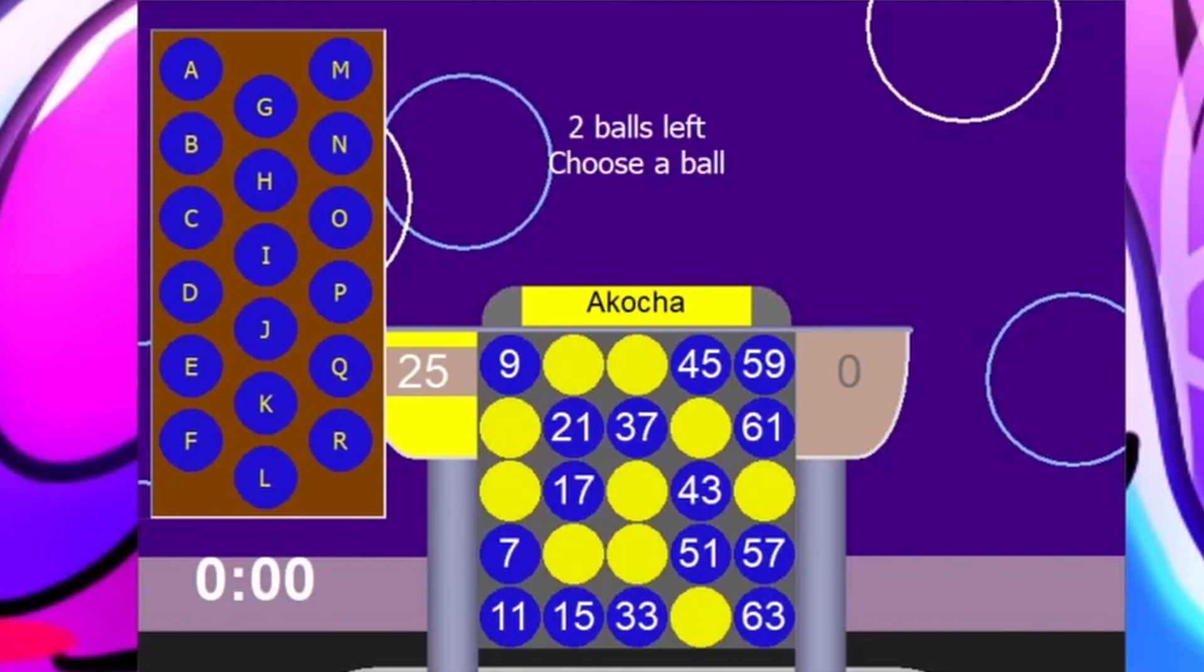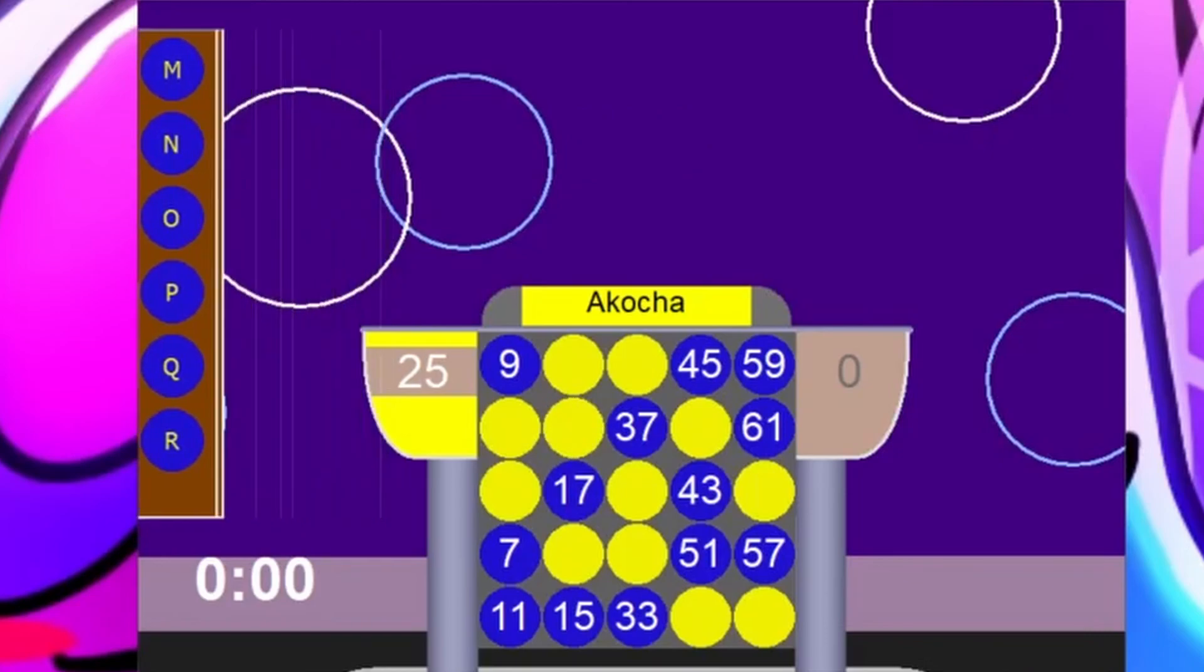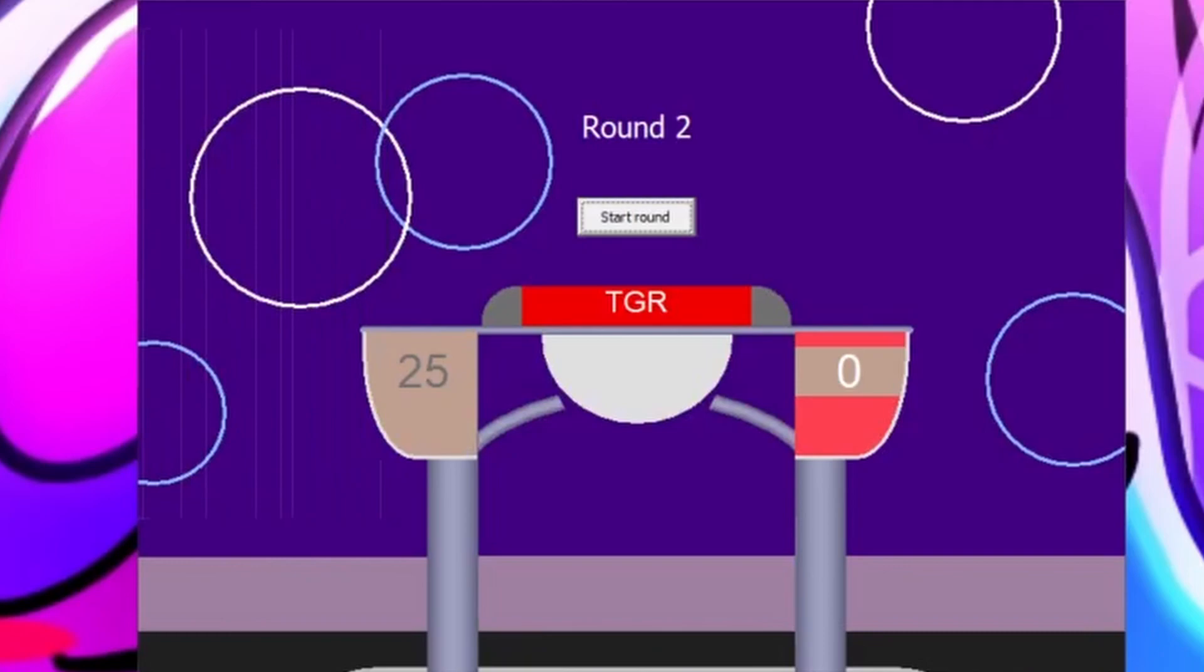You now pick up letters between A through R. Two balls. Okay, let's go. How about a G? A G. 63. There you go. How about I. 21. So that means the first round is over, unfortunately. TGR, you'll be starting off the second round.